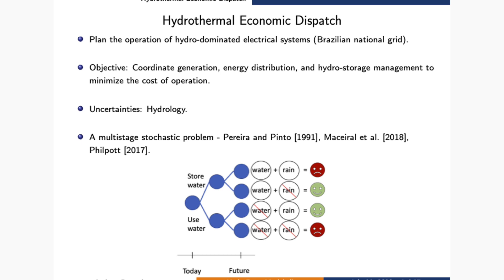But what's the problem we're trying to solve here? Hydrothermal dispatch deals with the planning and operation of hydro-dominated electrical systems such as the Brazilian national grid, but this is also relevant to the rest of the world since water is a widely used energy source. The objective of the problem is to coordinate generation, energy distribution, and hydro storage management to minimize the cost of operation across multiple stages. The biggest uncertainty here is hydrology. Imagine the system operator has to decide whether to use the cheap resource — water — now, or store it for future periods of drought.